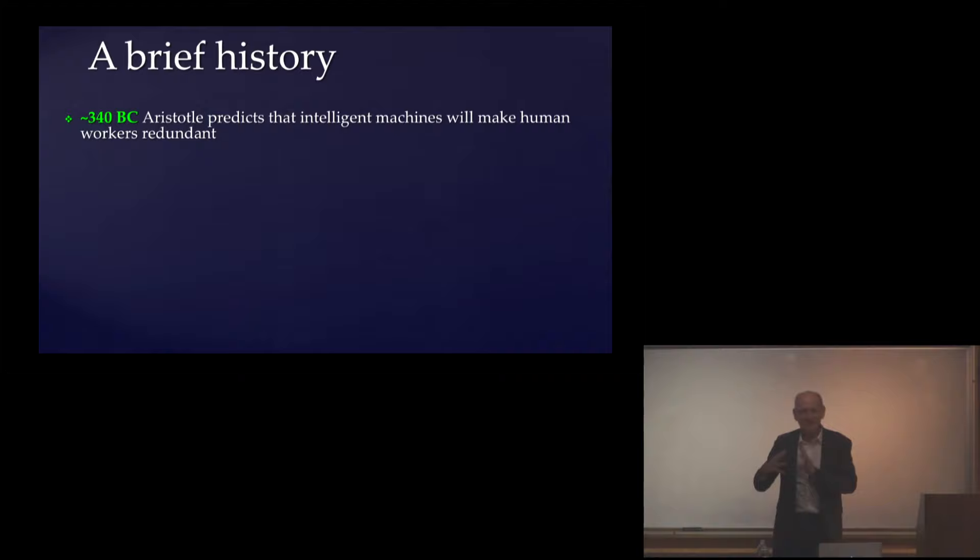I say in the book, actually, Aristotle, if he'd had a computer and I suppose some electricity, then he would have been an AI researcher. Because when you read what he writes, he talks about planning algorithms, logical reasoning with formal syntax and semantics of logical languages, forward chaining, backward chaining.